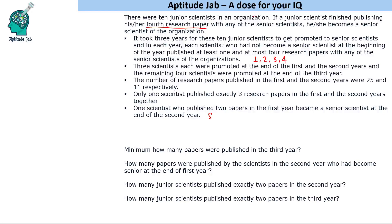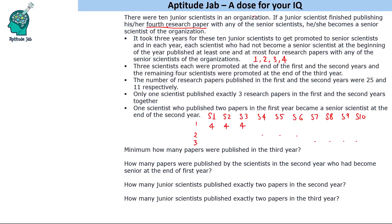Let's label these 10 scientists S1 through S10. They are publishing papers every year. Three scientists were promoted at the end of the first year, three at the end of the second year, and four at the end of the third year. The scientists promoted at the end of year one must have each published four papers. The total number of research papers published in year one is 25, in year two is 11, and year three is not yet known.